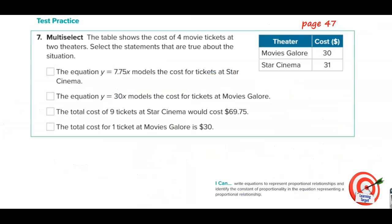Next, multi-select. The table shows the cost of four movie tickets at two theaters. Select the statements that are true about the situation. Well first of all, if this represents four tickets, how much is one ticket? Well what's 30 divided by four? Let's make that simple. So one ticket at Movies Galore is $7.50. And 31 divided by four is $7.75. So Star Cinema charges $7.75 per ticket.